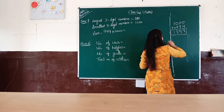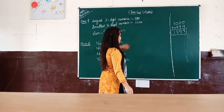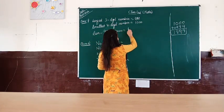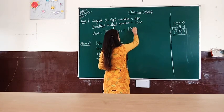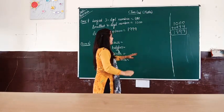So the sum of the largest 3-digit number and smallest 4-digit number is 1999.